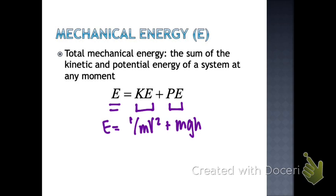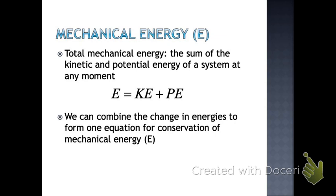Now we're going to move into proving the conservation of energy. The law of conservation of energy states that energy is neither created nor destroyed. As an object moves through a system, it is not losing energy — it might be transforming it to a different type, or storing it, but it is not technically losing energy. It is transforming it.